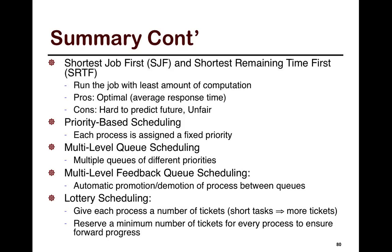Then we looked at priority-based scheduling, where each process is assigned a fixed priority. We looked at multi-level queue scheduling with different priorities for interactive versus batch processes. We looked at feedback-based ones which approximate shortest remaining time first by promoting or demoting processes based on whether they got to use the quantum given to them. Finally, we looked at lottery scheduling — a probabilistic technique where each process gets a number of tickets, short jobs get more tickets, and every job gets a minimum number of tickets to avoid starvation of long jobs. This finishes the lecture.